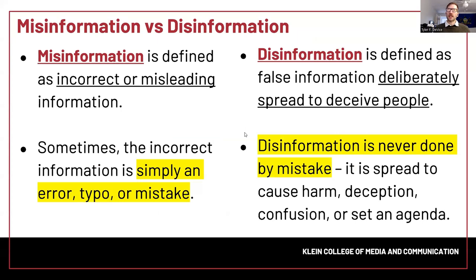Let's start with some definitions. There is a very key differentiation between misinformation and disinformation. They are often used in the same realm, but they are not the same thing. With misinformation, it's incorrect or misleading information — sometimes done completely by accident. It could be an error, a typo, or an honest mistake. It does not mean it was deliberately incorrect. Misinformation is just simply wrong. Disinformation, on the other hand, is deliberately wrong information that's spread to deceive people. We know it's wrong and we're still going to share it out because we want something to happen as a result.